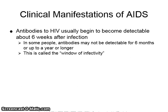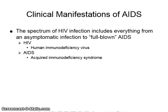Antibodies to HIV usually begin to become detectable about six weeks after infection. In some people, antibodies may not be detectable for six months, up to a year or longer. This is called the window of infectivity. The spectrum of HIV infection includes everything from an asymptomatic infection to full-blown AIDS.